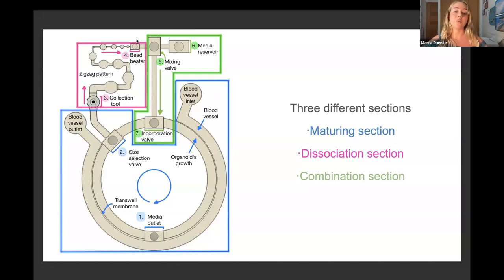Finally, we get to the combination module where we can see the mix valve that has two inputs. One of them contains the cells from the bead beater, and the other input is the media that we need to keep the organoids alive and make them grow. That's why I've placed a media reservoir here. The objective of the mix valve is to combine both fluids in balanced proportions so we can insert them again through the incorporation port into the maturation cycle. This way, we can start the whole process again for the period of time that we want.